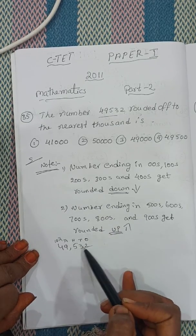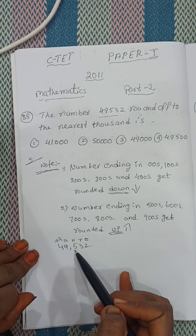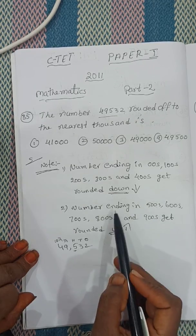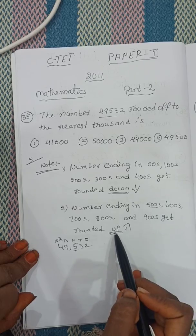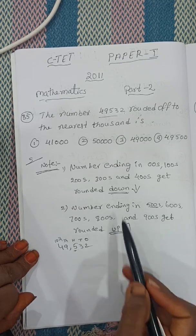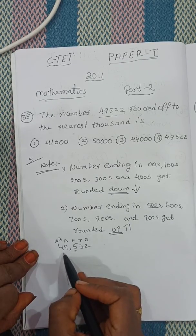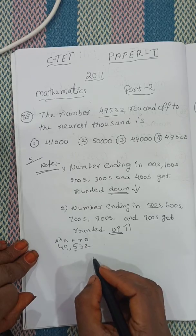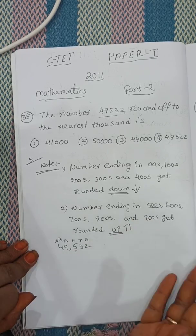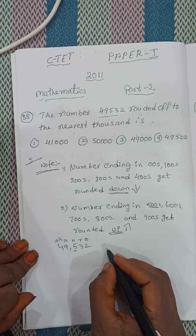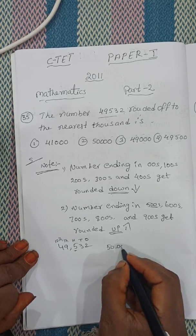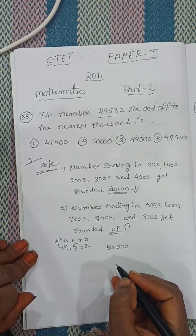Now here, in the hundreds place, which number is there? Five. If it's 500, ending in 500, you round it up. If 49,000 goes up, up means the next number. What is that? 50,000.